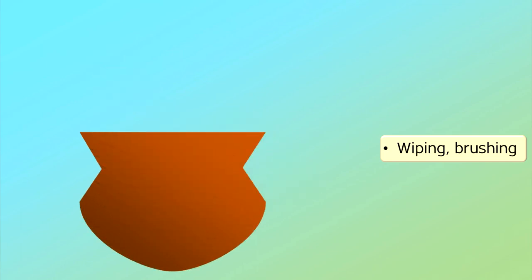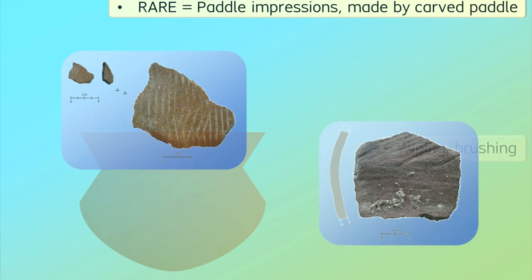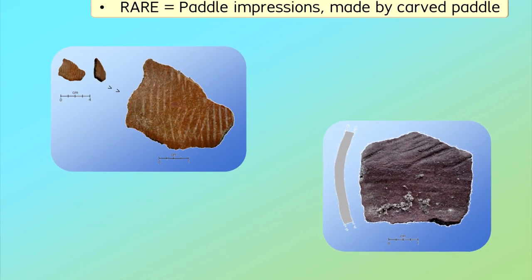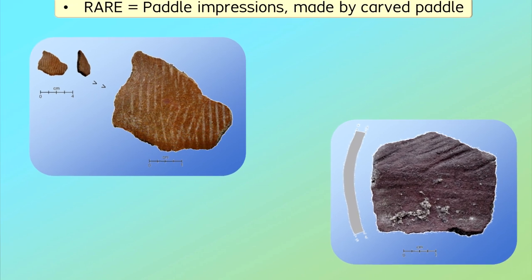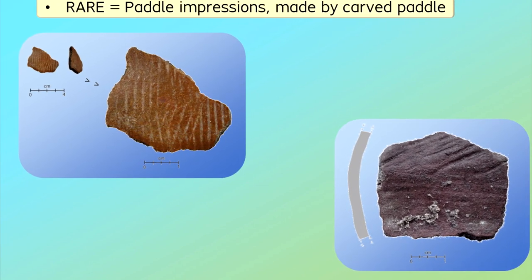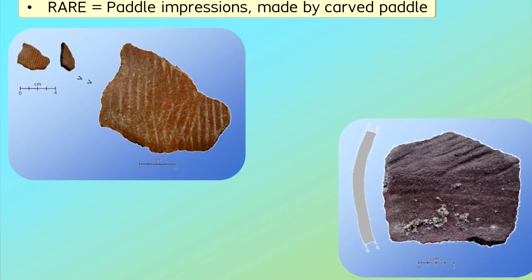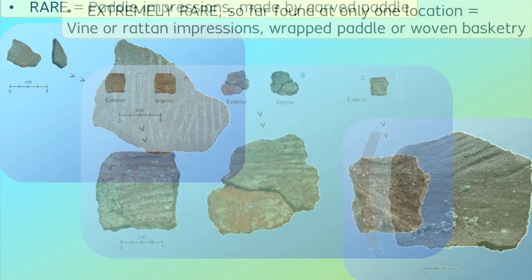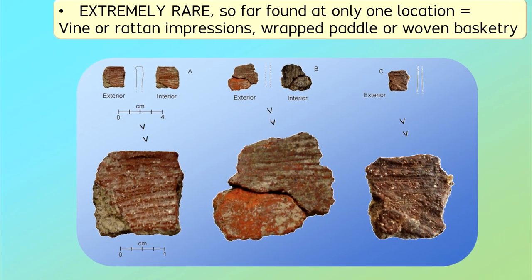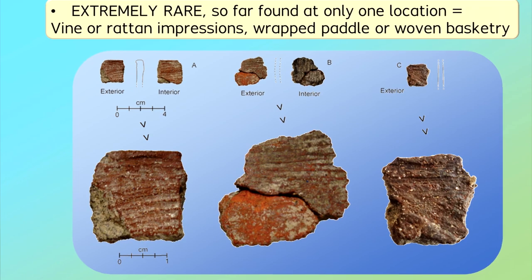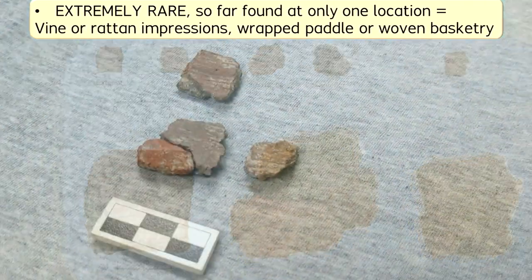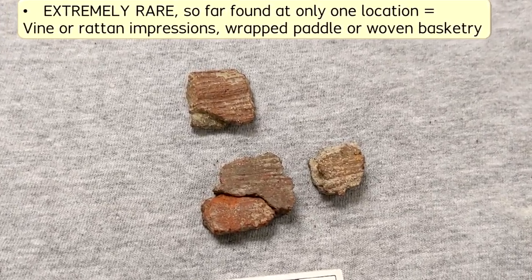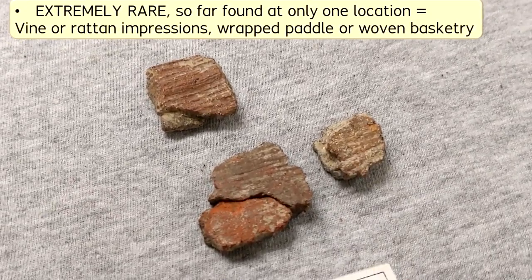In a few rare instances, the paddle marks still were visible, specifically when people used a carved paddle that created a decorative effect known as carved paddle impressed pottery. In one unique case so far at a ritual cave site in Guam, vines or rattan either were wrapped around a paddle or else were woven into basketry and then impressed into the clay.